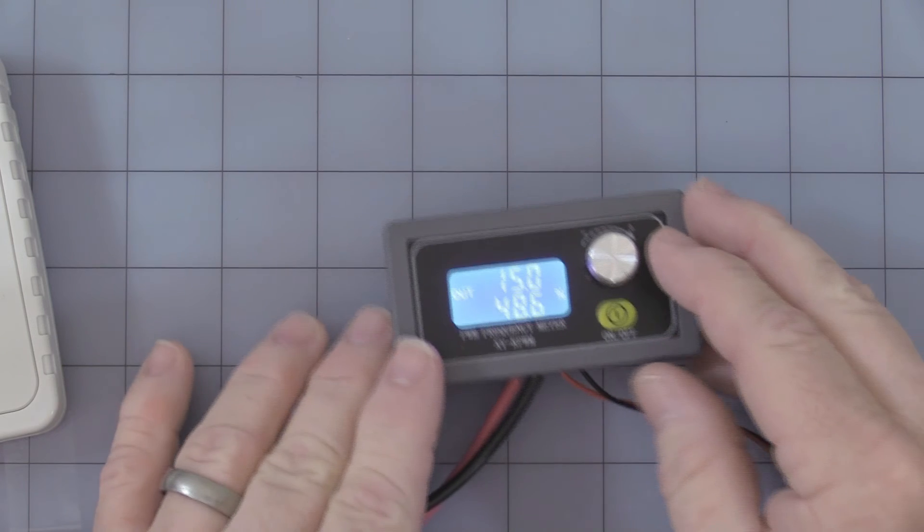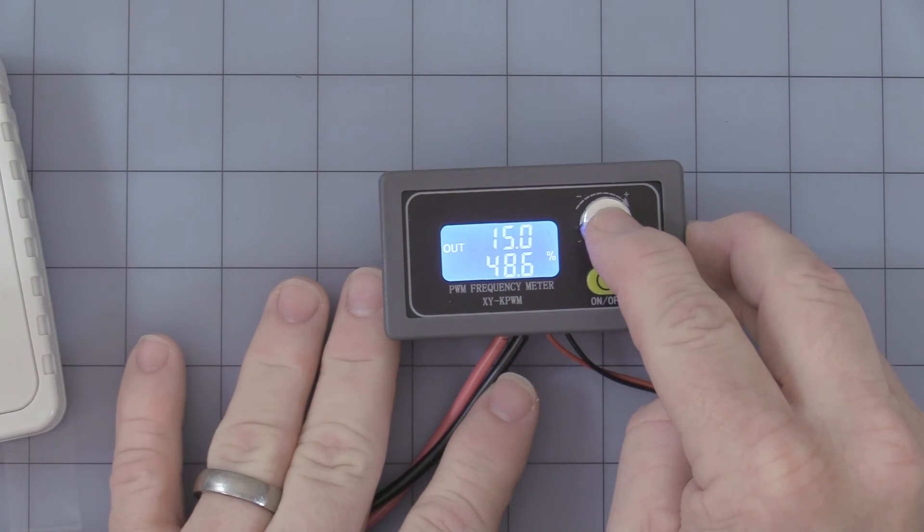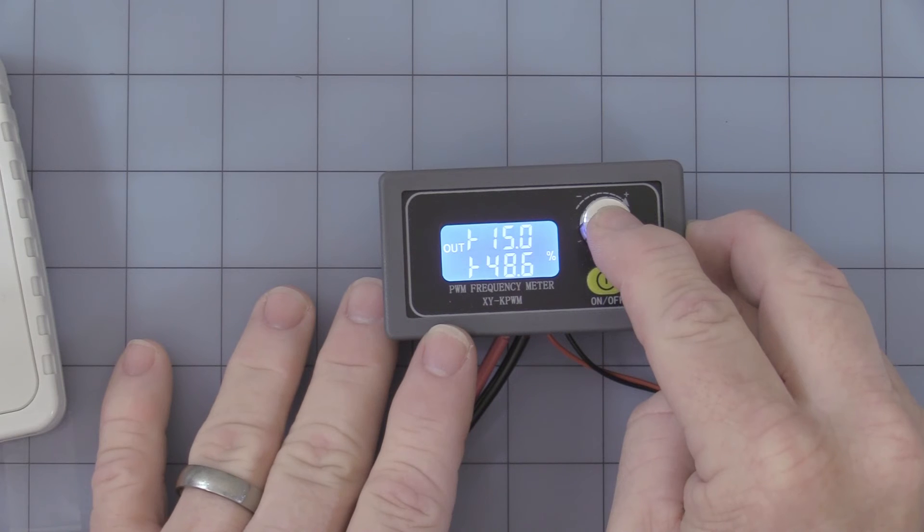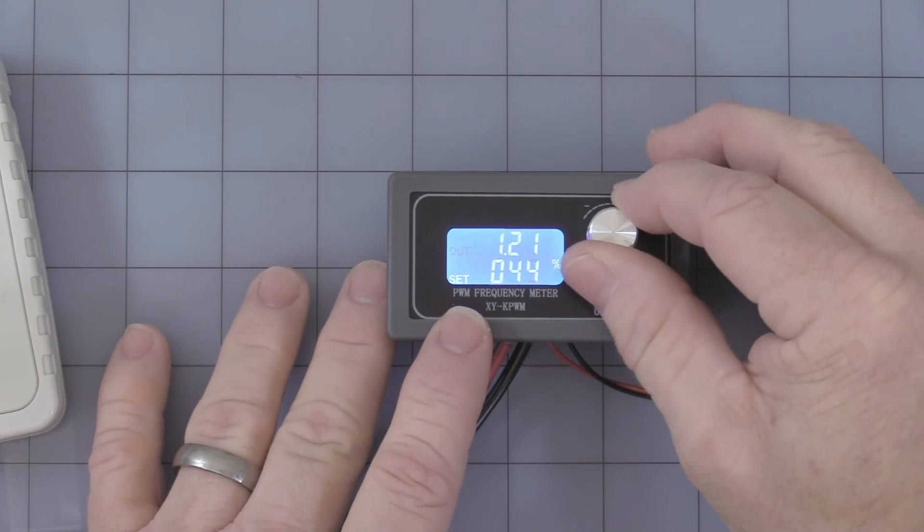To switch back to normal mode, you would simply press and hold. Okay, once you get past this mode—okay, now we're back into, as you see, the regular normal mode.